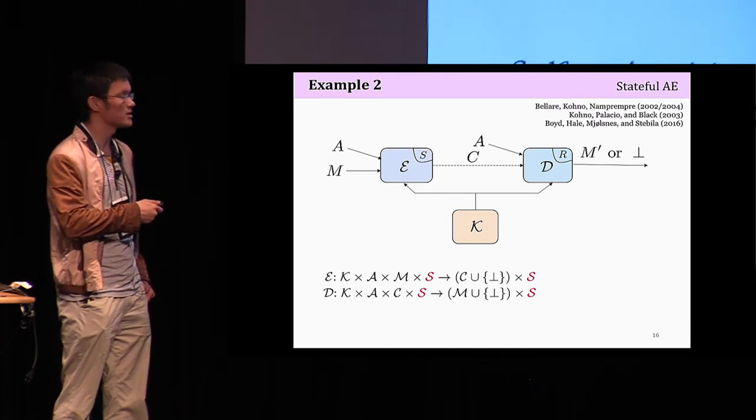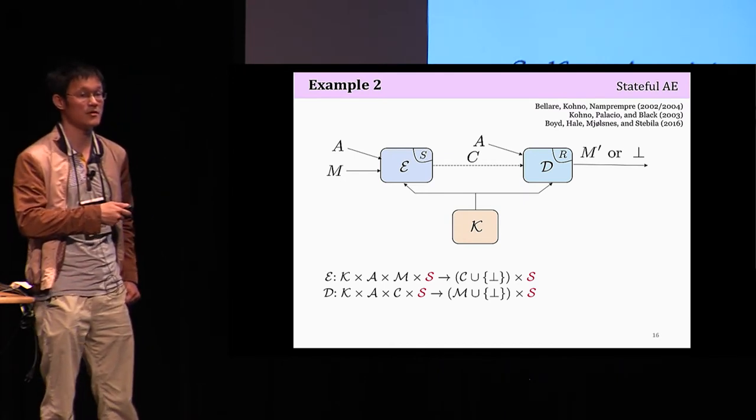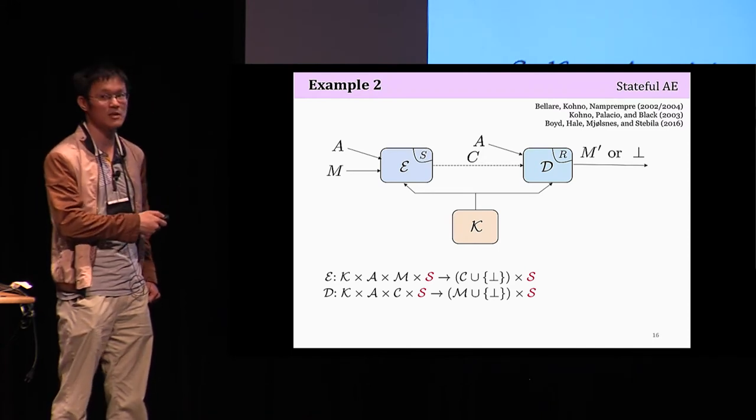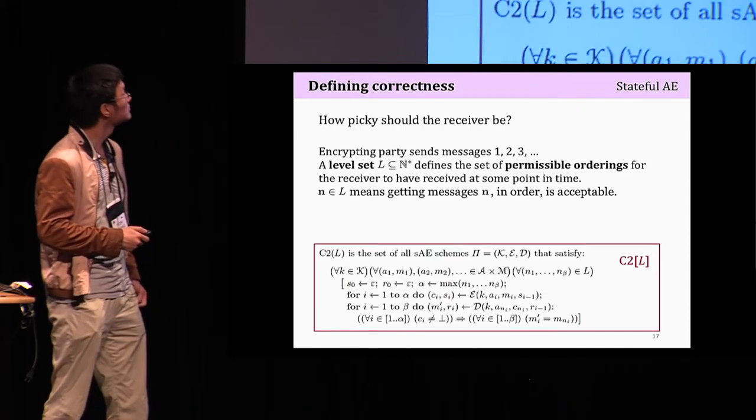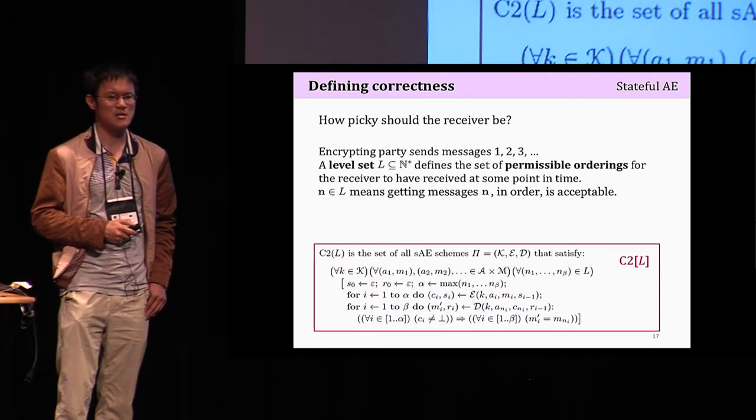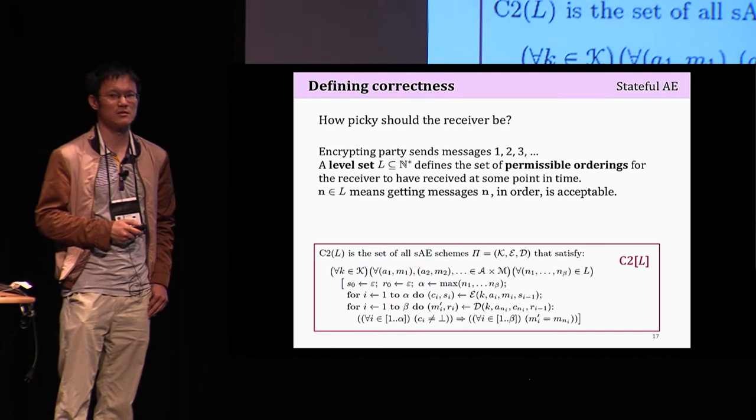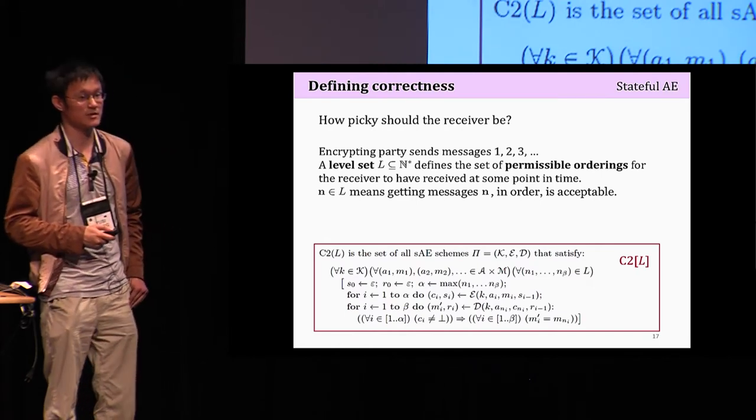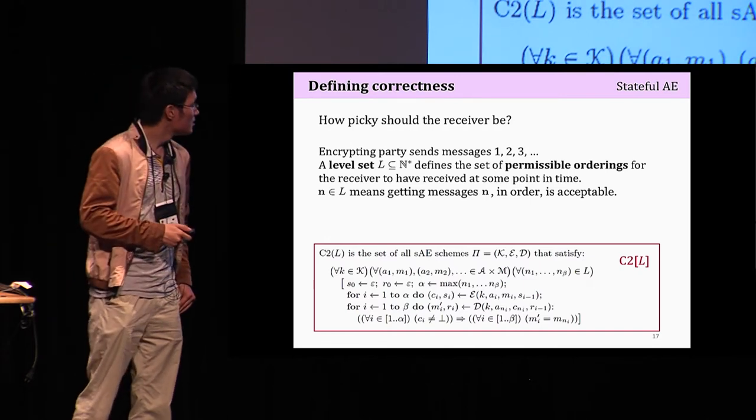First, the syntax. We simply augment the traditional authenticated encryption syntax by a state space, both in the input and in the output. And next, we need to define correctness. Somehow, surprisingly, this question, to the best of our knowledge was not answered explicitly in the literature. We choose it.